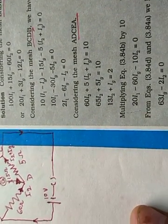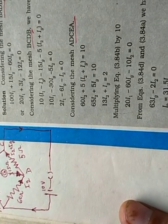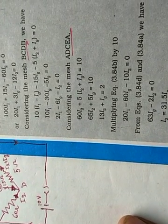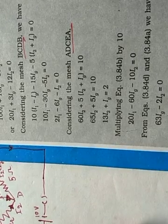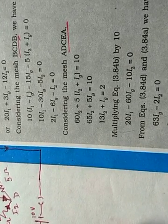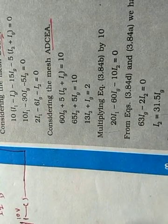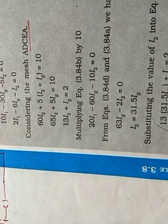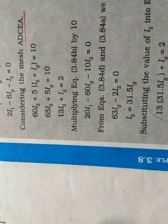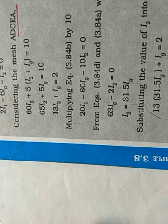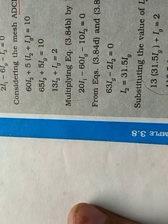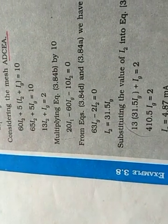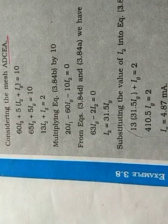And similarly, we calculate and get the equation for loop BCDB using Kirchhoff's law, and also we consider the third mesh ADCEA. And again, we get the equation in the same manner exactly.